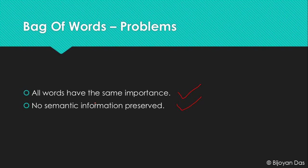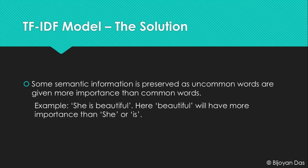So let's find out how we can improve the bag of words model. The solution is a TF-IDF model. We will get into what TF is, what IDF is, and what the whole model is. In the sentence 'she is beautiful', the word 'beautiful' has more importance compared to 'she' or 'is' — because changing 'beautiful' to 'ugly' changes the whole meaning. This is what the TF-IDF model does: it gives importance to the uncommon, important words.